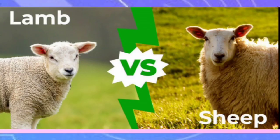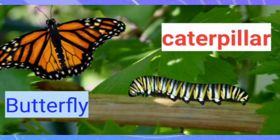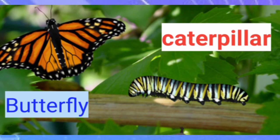The baby of sheep is lamb. The baby of butterfly is caterpillar. Thank you.